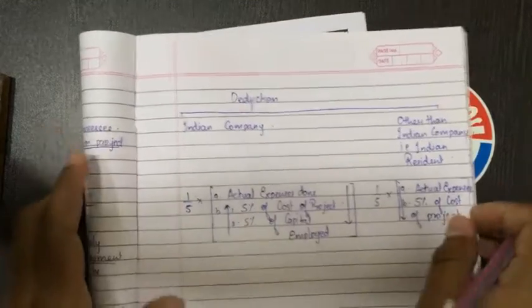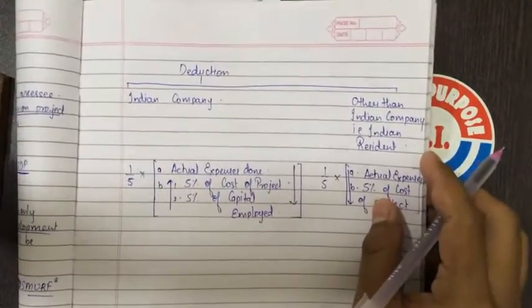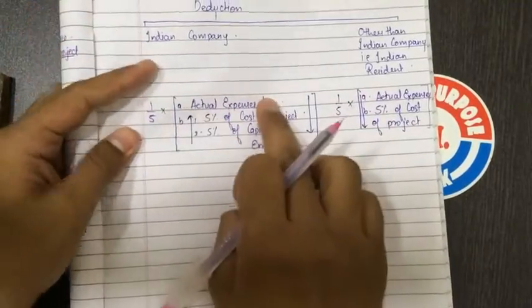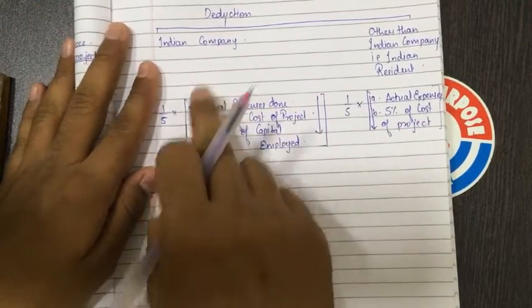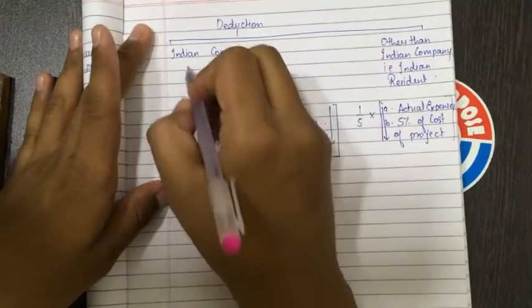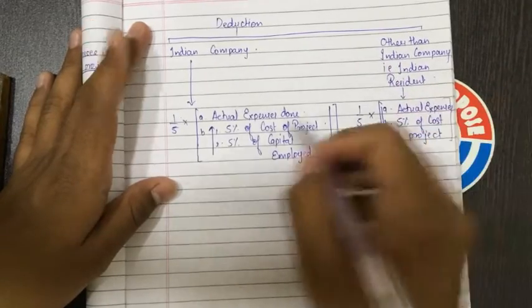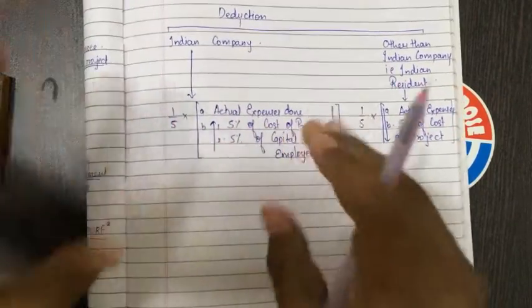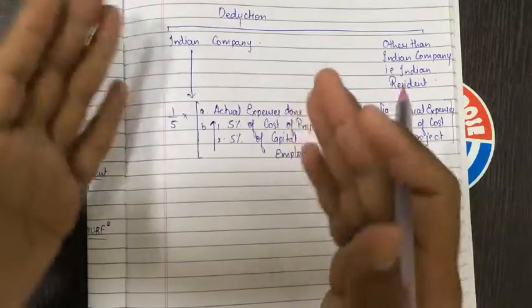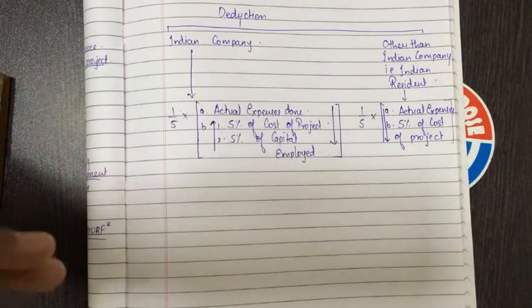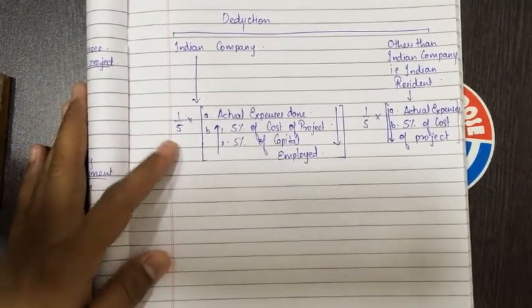Actual expenses means all expenses incurred. In case of an Indian company or other than Indian company (Indian resident), the amount is divided into five equal parts. The first part will be allowed in the previous year, and the remaining parts will be allowed in the next five equal assessment years — not assessment years, next previous years.